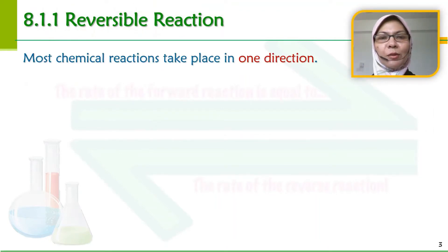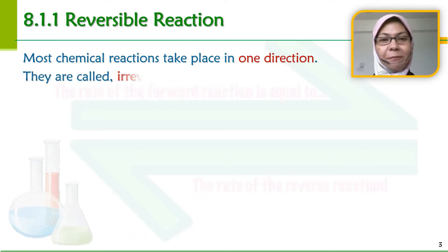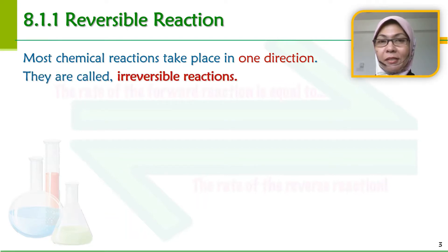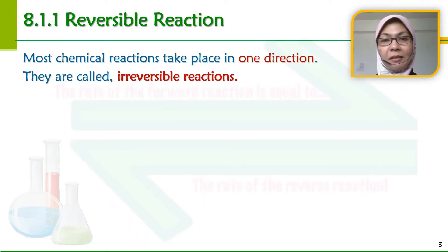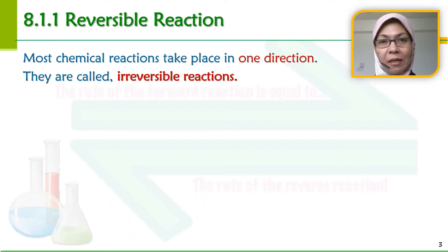Most chemical reactions take place in one direction. Maksudnya, selalunya tindak balas kimia akan berlaku searah saja — daripada reactant menjadi produk. Tindak balas-tindak balas yang seperti ini kita panggil tindak balas tidak berbalik atau irreversible reaction.